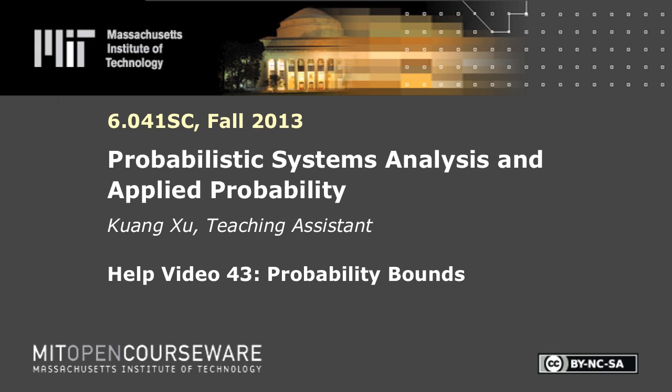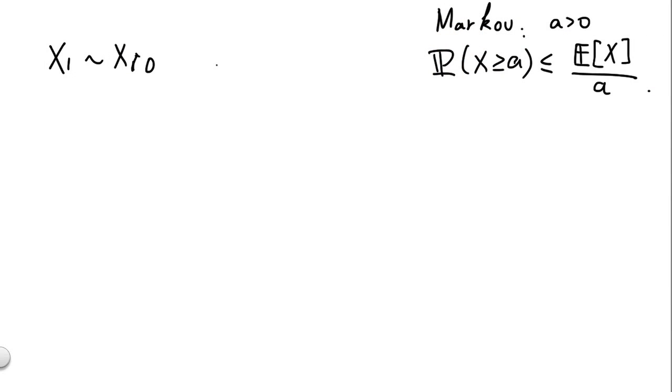In this problem, we're given a collection of 10 variables, x1 through x10, where each xi is a uniform random variable between 0 and 1. So each xi is uniform between 0 and 1, and all 10 variables are independent. We'd like to develop a bound on the probability of the sum of the 10 variables being greater than 7, using different methods.